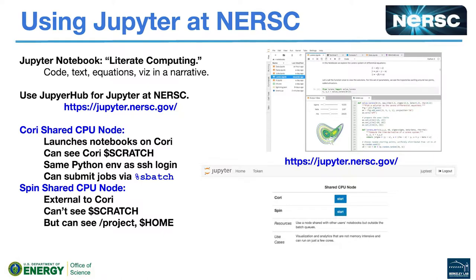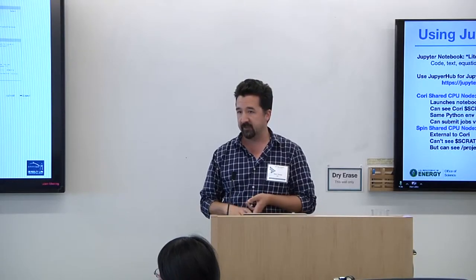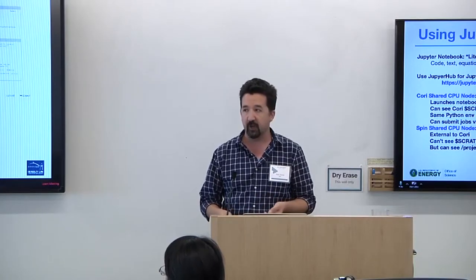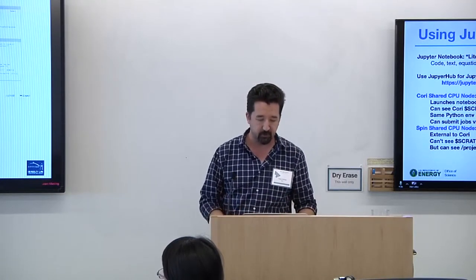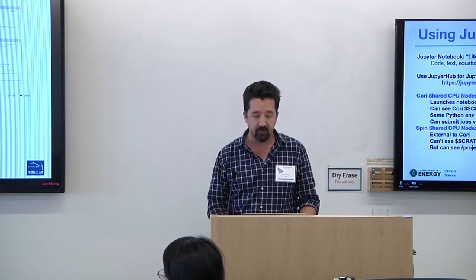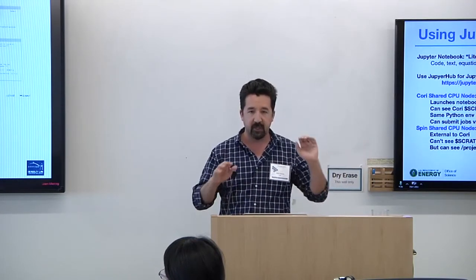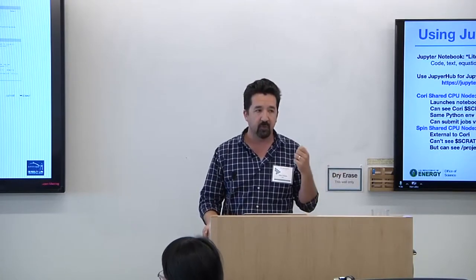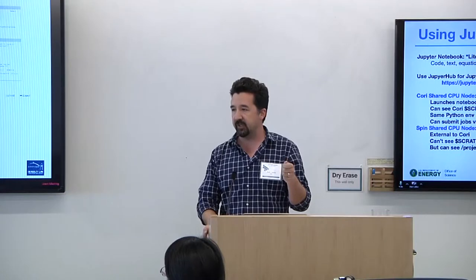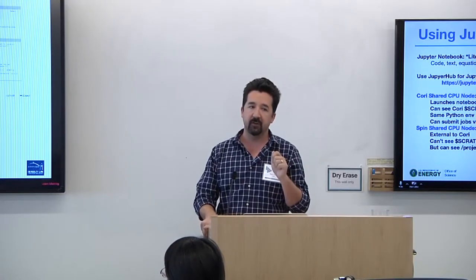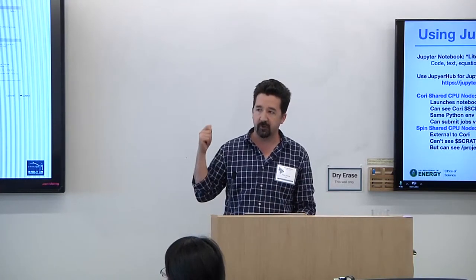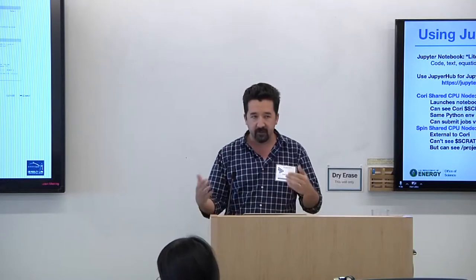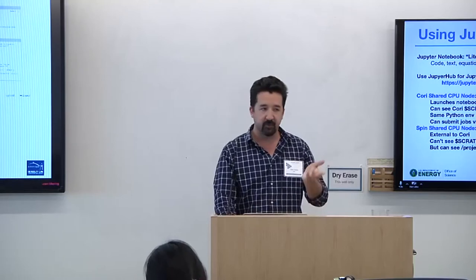Why run on Cori? Your notebooks are on Cori, they can see the Cori scratch file system, it's the same Python environment as if you SSHed in, and you can submit jobs. We have handy tools for submitting jobs from cells called Slurm magics. The Spin shared node configuration is external to Cori — it can't see scratch and you can't submit jobs from it. It's for when you have a paper deadline and need to get to data on project to make that last plot. Last I looked, there were 200 notebooks running on Cori and about two in Spin.